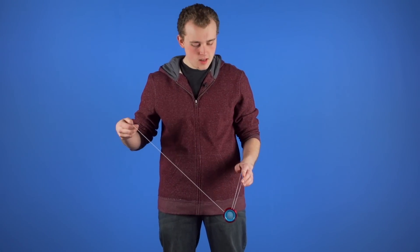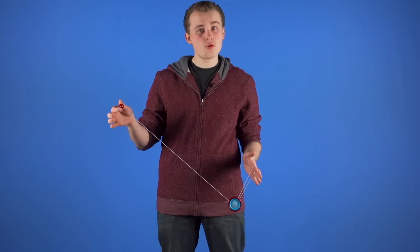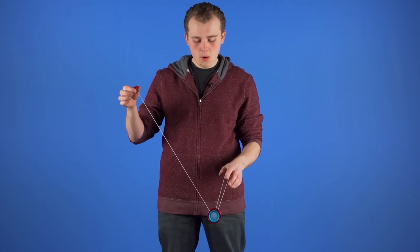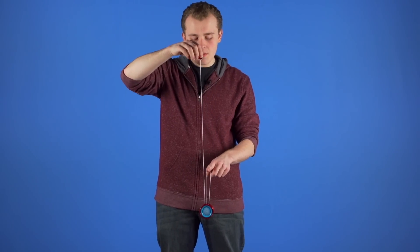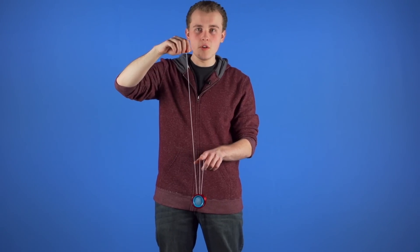To perform 360, first you want to start in trapeze and then you want to check your string proportions. Bring your throw hand up so that the string is touching your opposite pointer finger and you want the string above your finger to be about 3 times as long as the string under your finger.